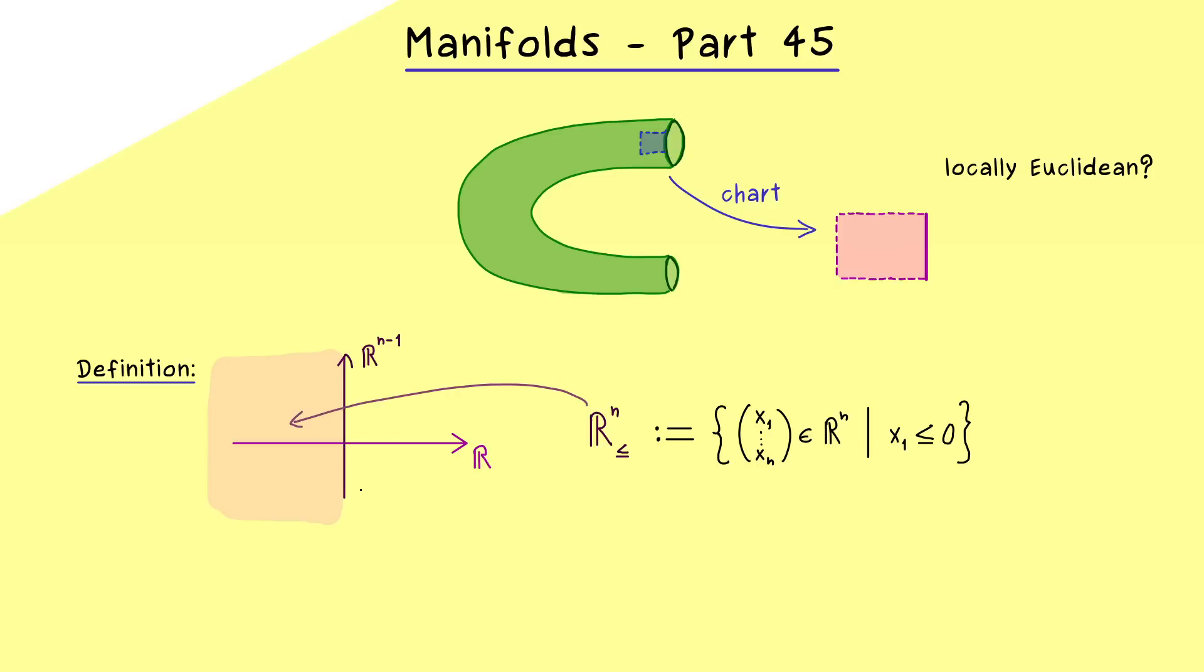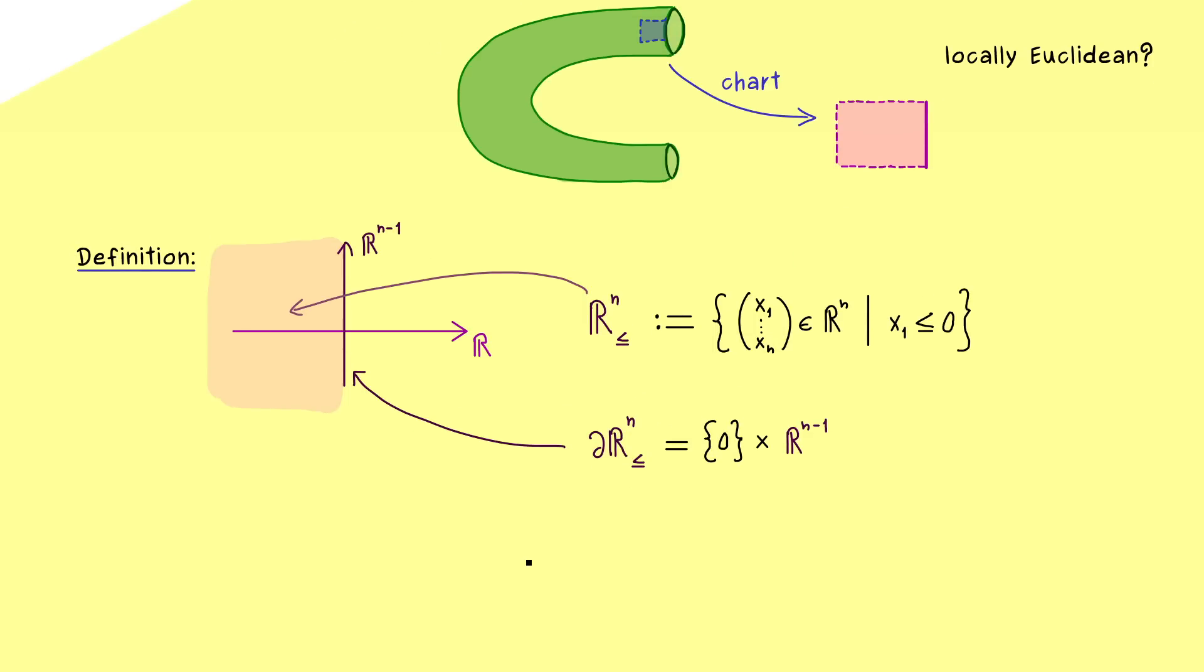Okay, so this is the half-space, and now our n-1 dimensional subspace here should also get a name. This one we call the boundary of the half-space, and we also use the partial d here. And if we want, we can write it as a Cartesian product, namely 0 times Rⁿ⁻¹. And at this point, I should already warn you that this partial d is very often used when we talk about manifolds with boundaries. However, in that context, it usually does not denote the topological boundary as we have defined at the beginning of the series. So just be careful when you see the symbol; please note the context where it's used.